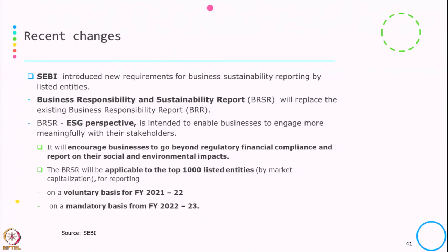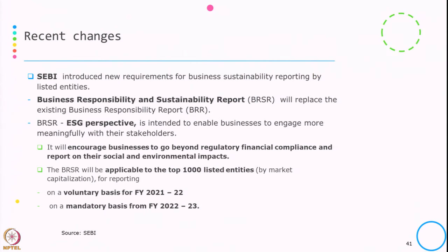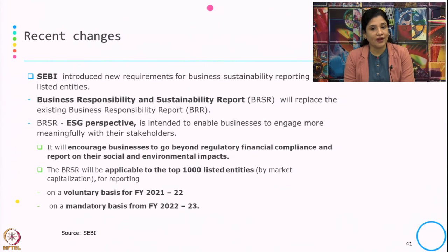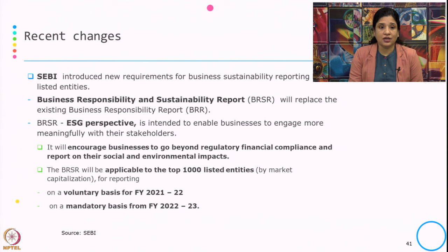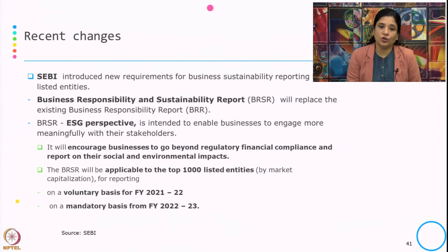The most recent change with respect to disclosure is the introduction of a new requirement — the Business Responsibility and Sustainability Report (BRSR) — which will replace the existing Business Responsibility Report. The focus is an ESG perspective and it is intended to enable businesses to engage more meaningfully with their stakeholders and to go beyond regulatory financial compliance by reporting on their social and environmental impact. This is applicable to the top 1000 listed companies by market capitalization, was voluntary in 2021-22, and will be mandatory from financial year 2022-23.